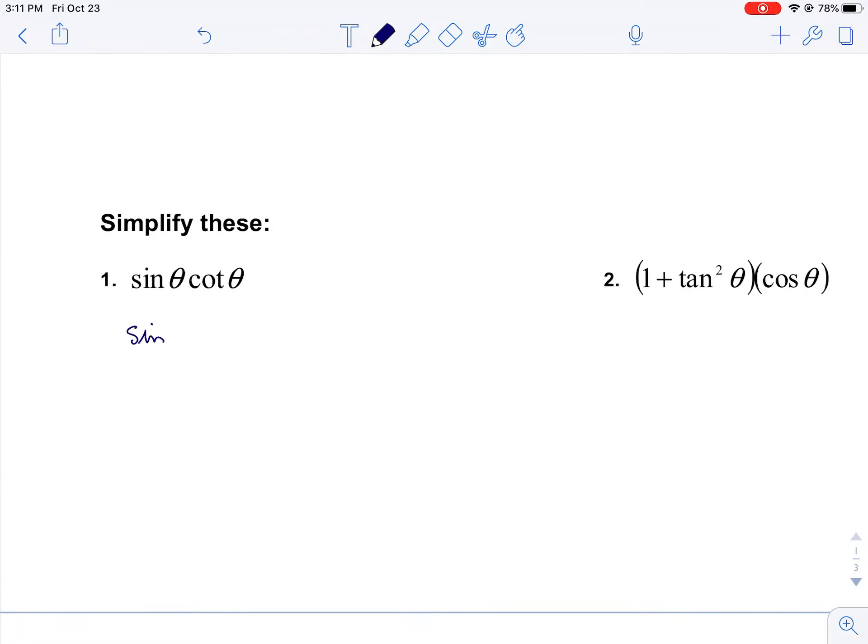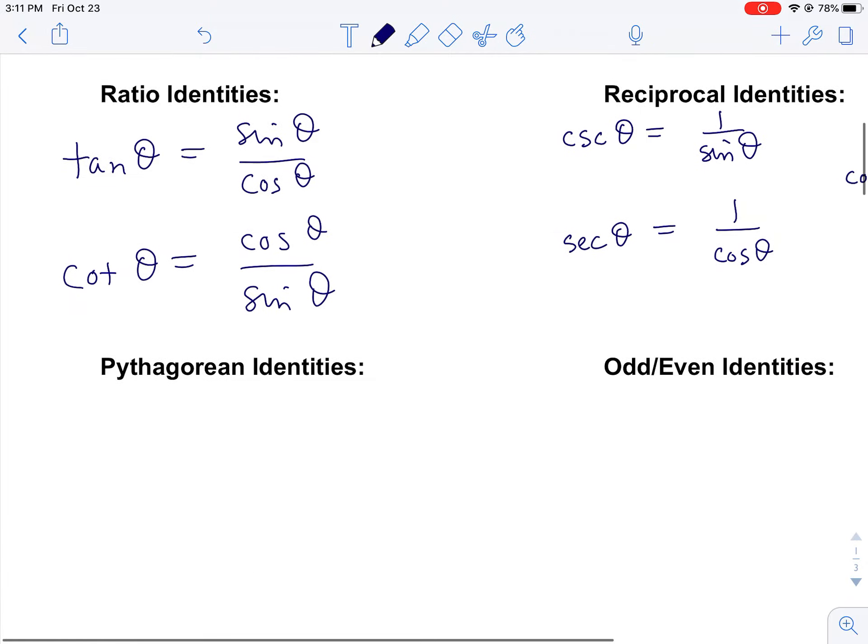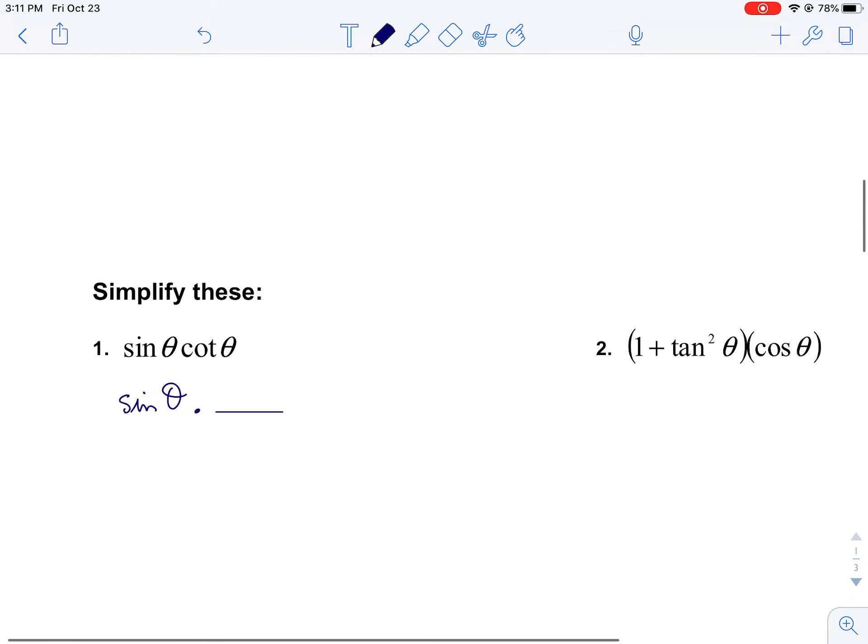As a rule of thumb, sines and cosines we kind of leave alone, and then we try to rewrite the other functions. By that I mean, cotangent is a ratio identity. You could see up above, cotangent can be written as cosine divided by sine.